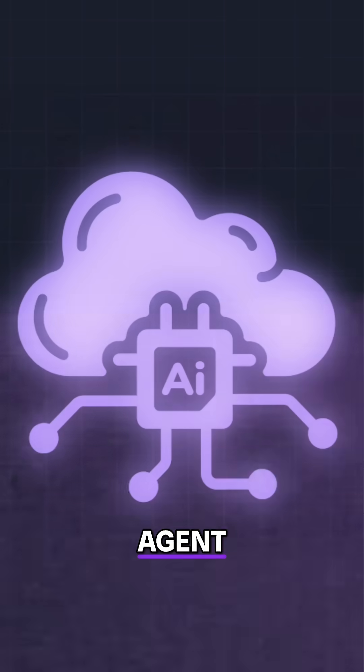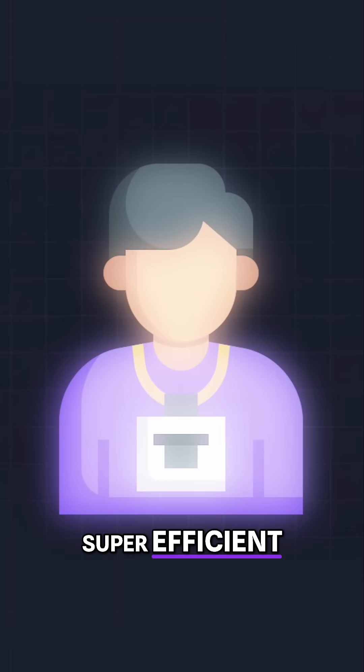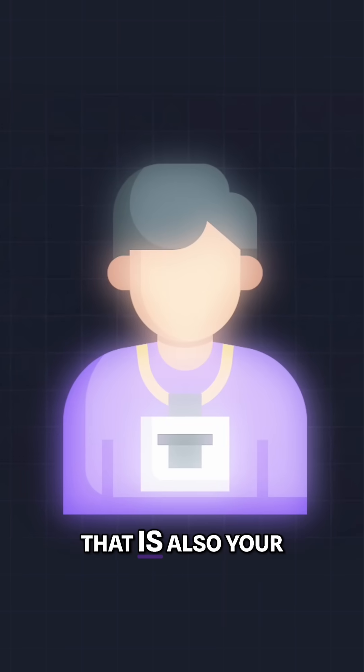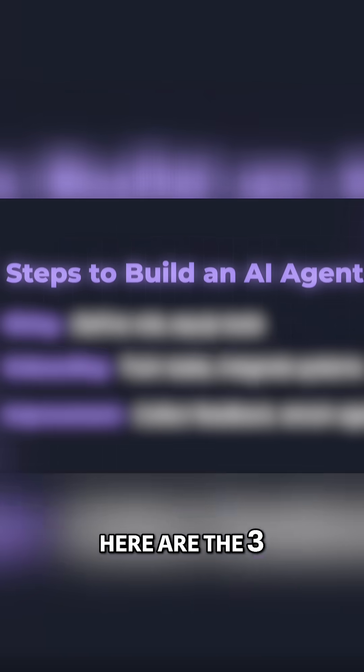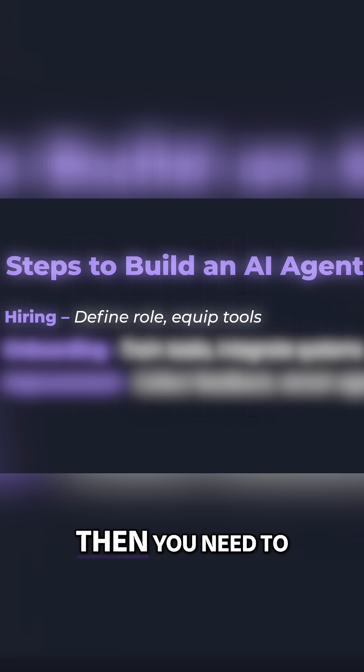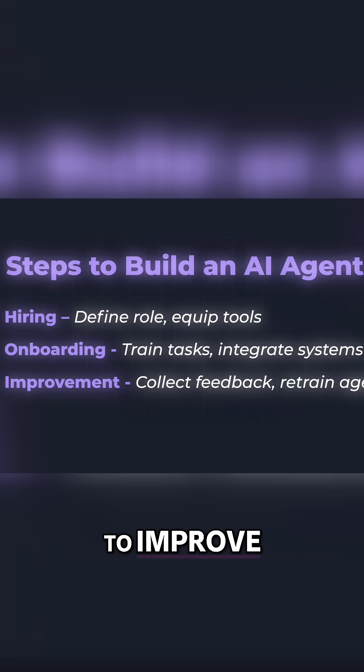So what is an AI agent? An AI agent is like a super efficient intern that is also your assistant. Here are the three steps in order to build your first AI agent. It's actually exactly like hiring an employee. You need to think of it as: first you need to hire, then you need to onboard, and then you need to improve.